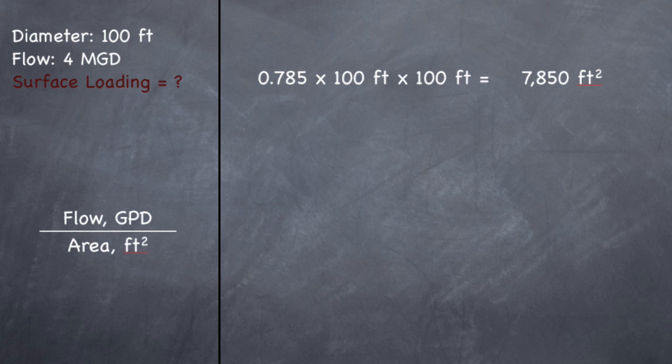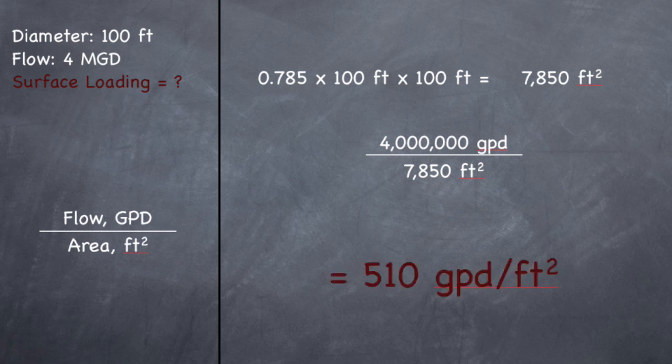So that's how many square feet are on the surface of this clarifier. So the flow in gallons per day, multiply 4 by 1 million, so 4 million gallons per day divided by 7,850 square feet will give you a surface loading of 510 gallons per day per square foot. So one square foot on this surface is going to receive 510 gallons per day, and that's surface loading.